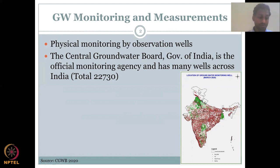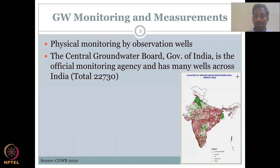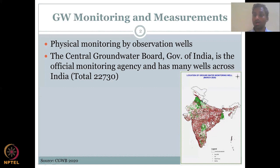As mentioned in previous lectures, for groundwater to be available you need soil plus weathered material. In purely rocky hilly regions, there isn't much groundwater, so regular monitoring isn't as important there. Along the borders you don't see much groundwater monitoring, but in central India and wherever there's good agricultural activity, you see a good spread of monitoring wells.